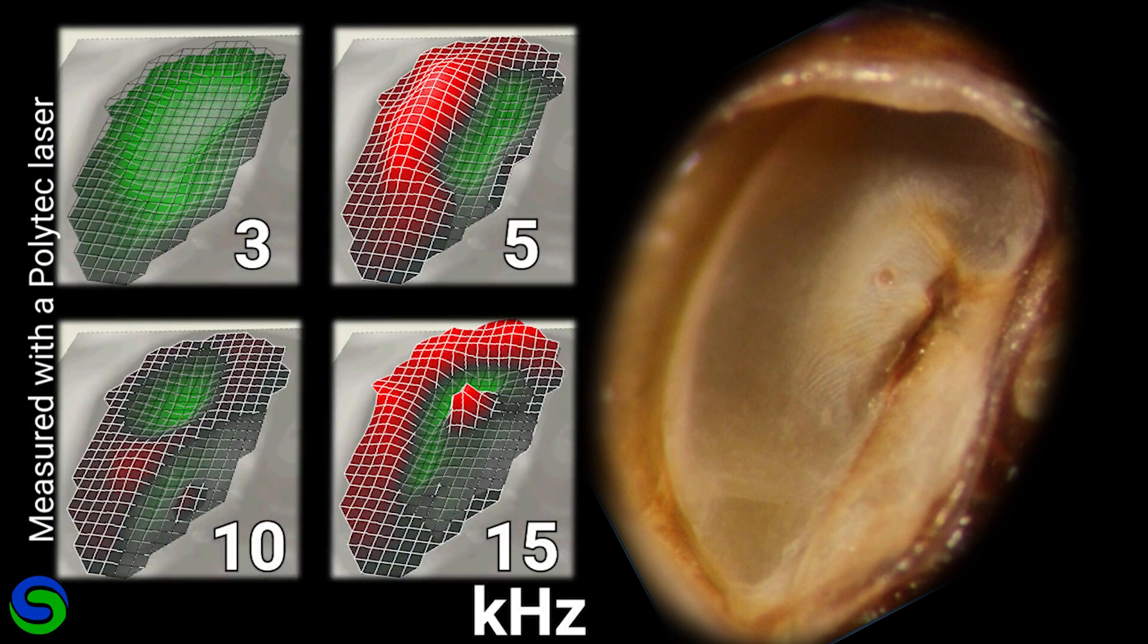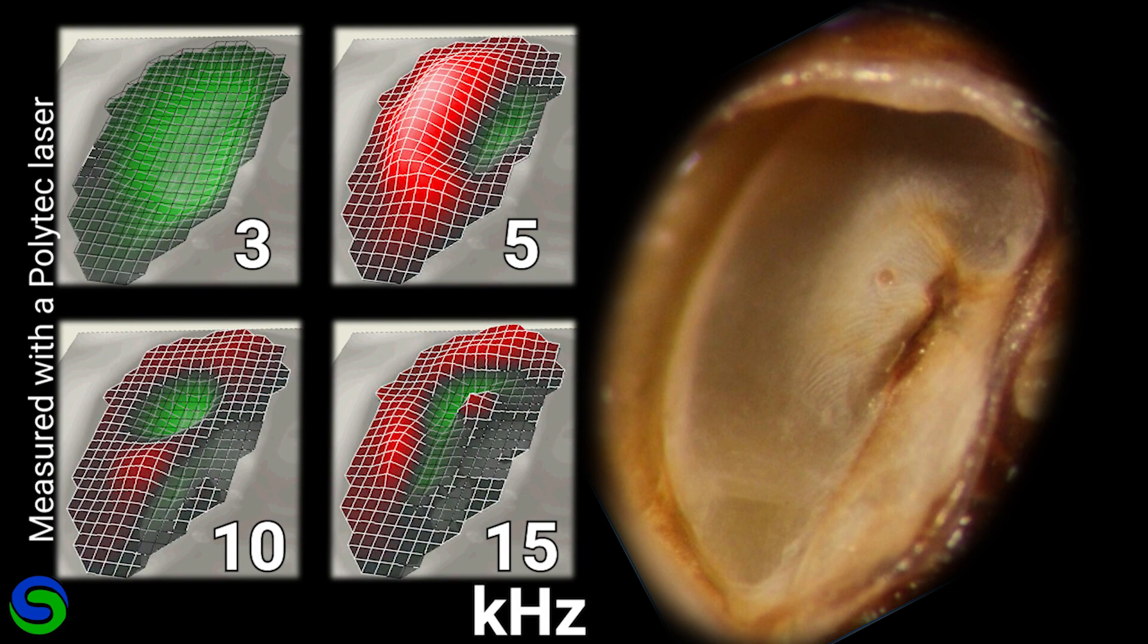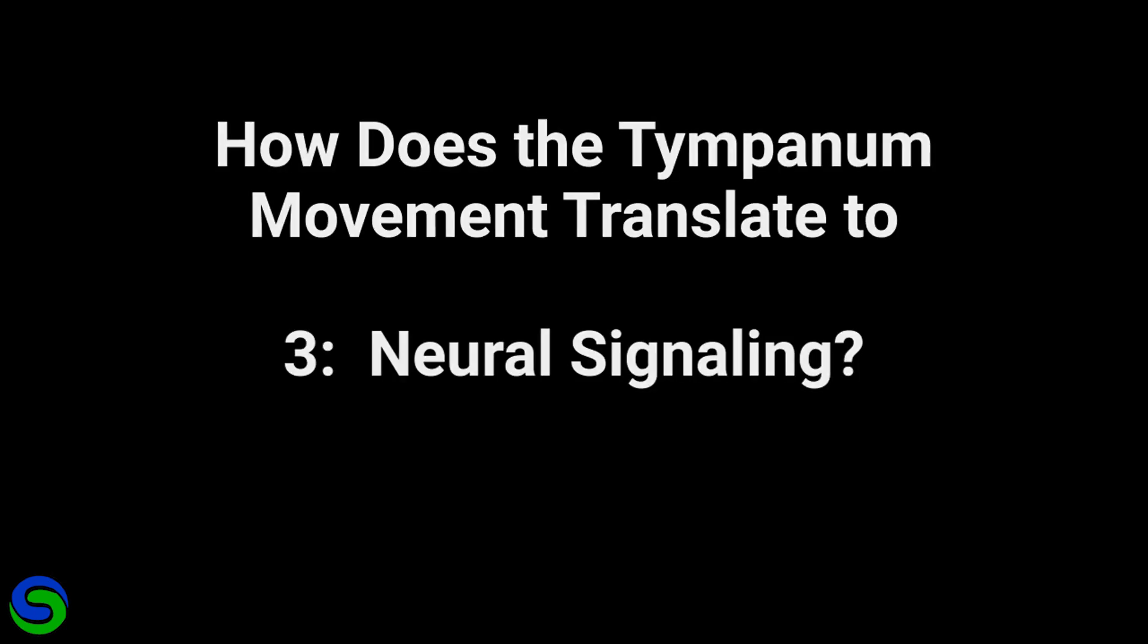Playing these four frequencies next to each other, you can see the difference in movement. Recognizing the tympanal membrane moves differently based on sound frequency is really interesting, but how does tympana movement translate to neural signaling?